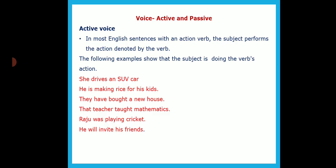Voice is an aspect of the verb that shows if the subject is acting or if that particular action is done to the subject. It is the two ways in which the same sentence is told. In active voice, you have sentences with an action verb, and the subject will be performing the action denoted by the verb.